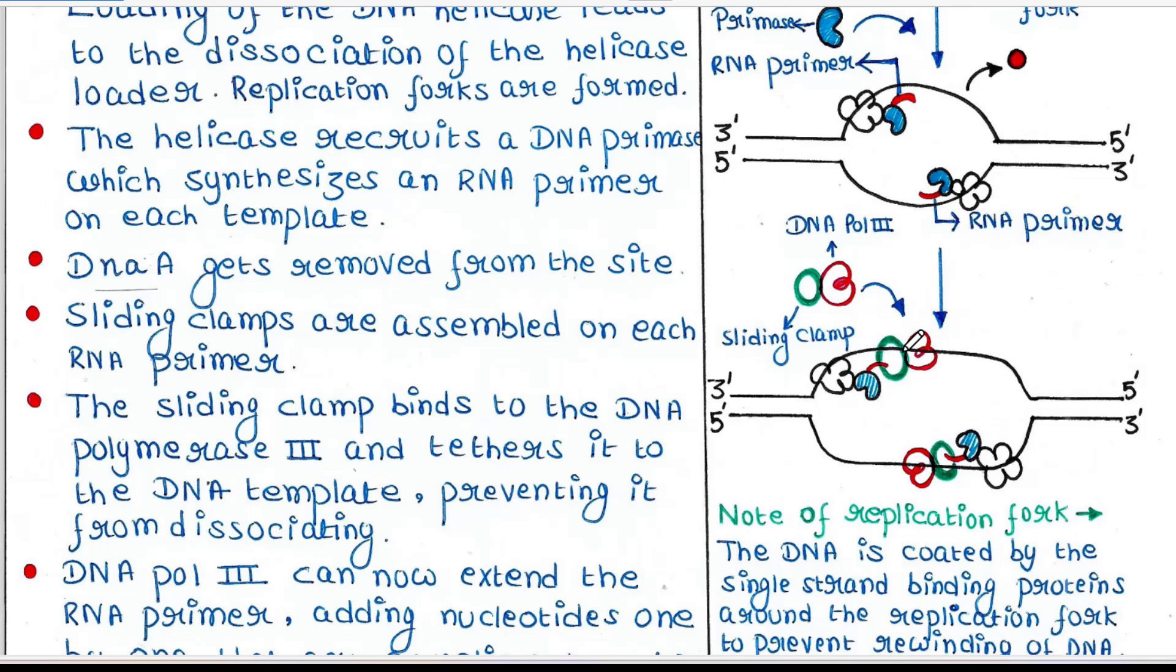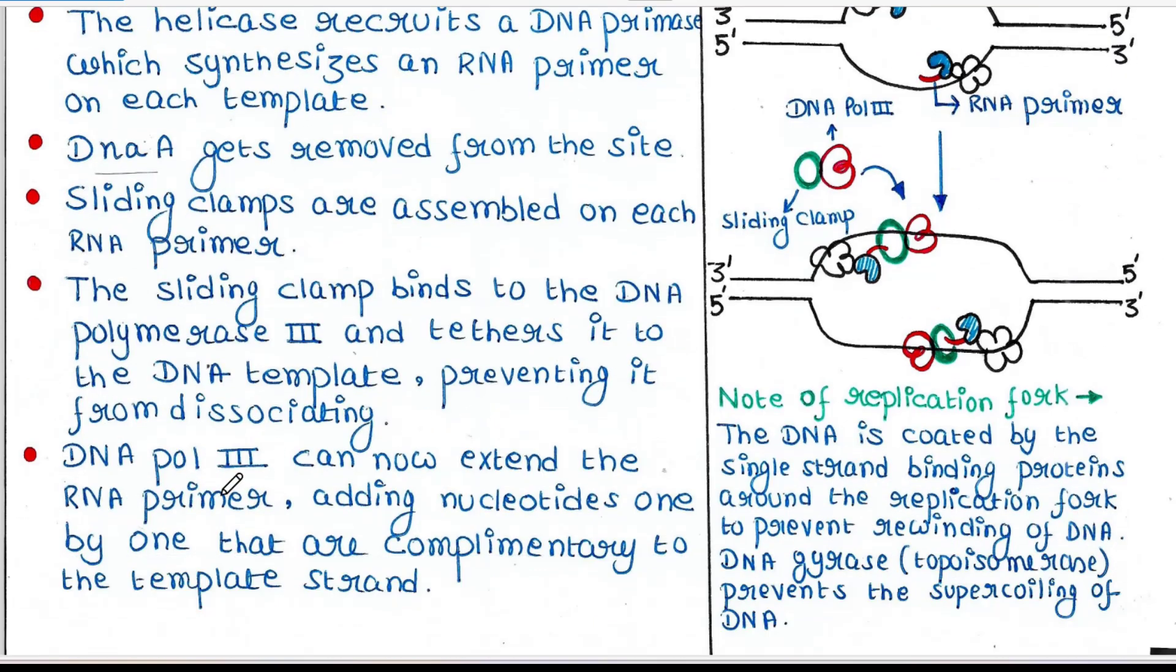The sliding clamp acts like a hook which holds DNA polymerase 3 tightly so that it doesn't slip from the DNA template. DNA polymerase 3 can now extend the RNA primer, adding nucleotides one by one that are complementary to the template strand.